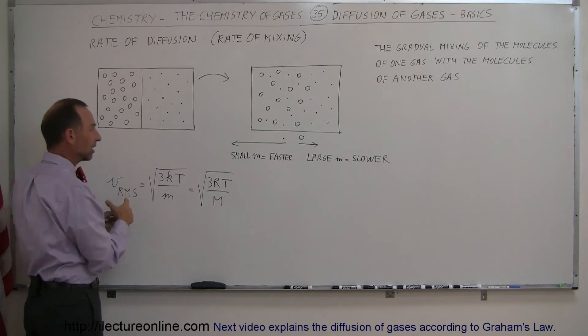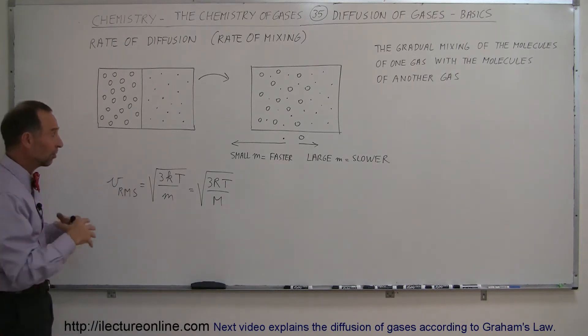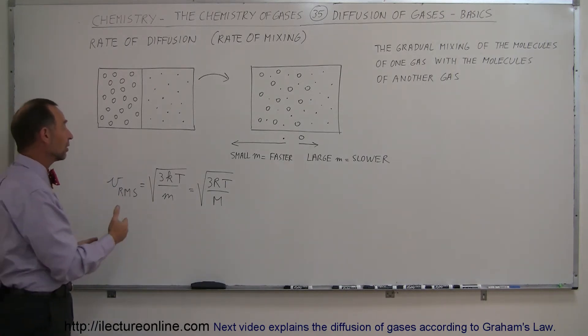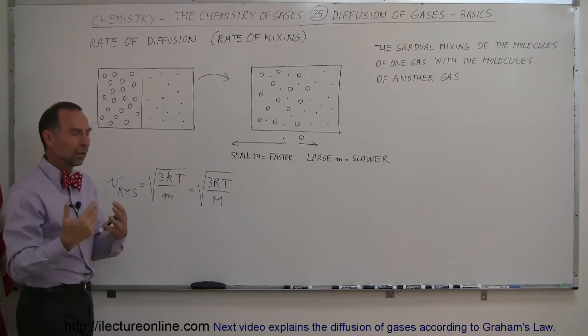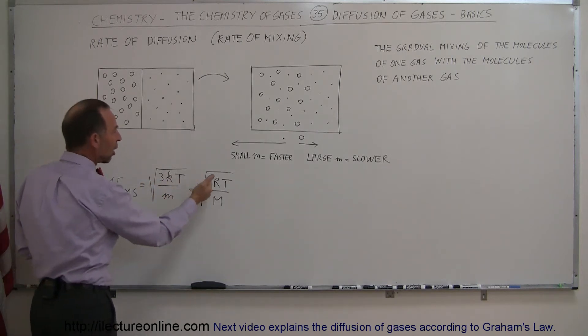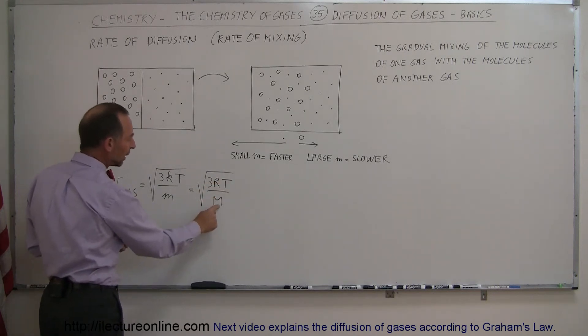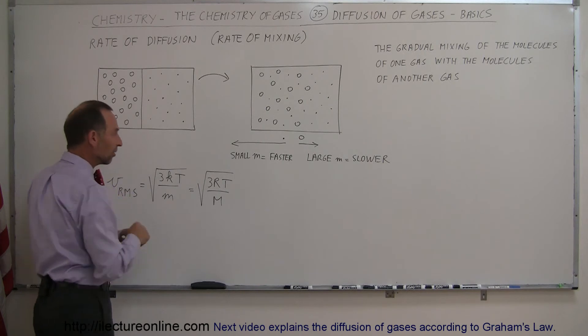Remember that the RMS velocity, the root mean square velocity or representative velocity of a molecule, is equal to the square root of 3KT over M, or in standard units, 3RT over the molar mass. And notice that a bigger molar mass means smaller velocities.